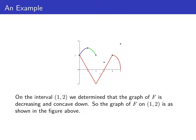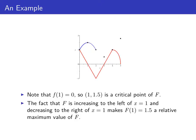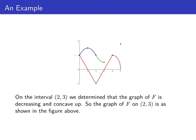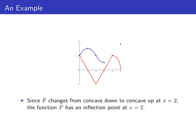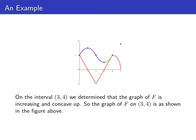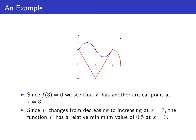On the interval from 1 to 2, big F is decreasing and concave down, giving us another arc connecting those points. Note that little f of 1 equals 0, so the point (1, 1.5) is a critical point of big F, and since big F is increasing to the left and decreasing to the right, it's a relative maximum. On the interval from 2 to 3, big F is decreasing and concave up. Big F changes from concave down to concave up at x equals 2, so there's an inflection point there. On the interval from 3 to 4, big F is concave up and increasing. Since little f of 3 equals 0, big F has a critical point at x equals 3, and since big F is decreasing then increasing, there's a relative minimum at x equals 3.